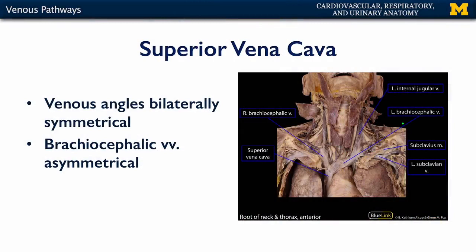One misconception people have regarding the veins is that they are symmetrical. When we look at the major veins of the thorax, we can see that the superior vena cava is actually quite linear with the right brachiocephalic vein, whereas the left brachiocephalic vein is very long and oblique, crossing the superior mediastinum. We can see those veins formed by the junction of internal jugulars with the subclavians, and some of those external jugulars have been pushed away because muscles such as the sternocleidomastoids have been reflected.